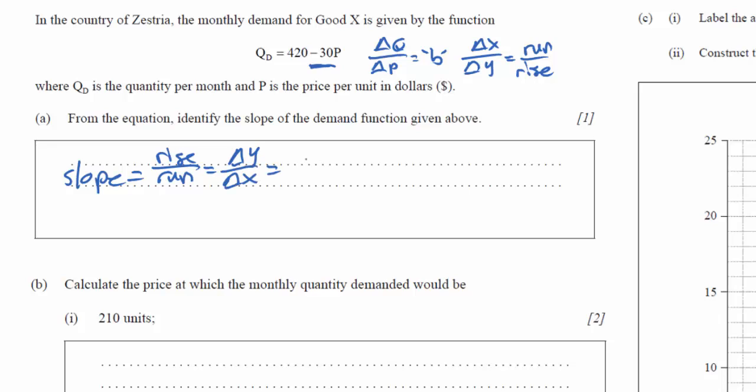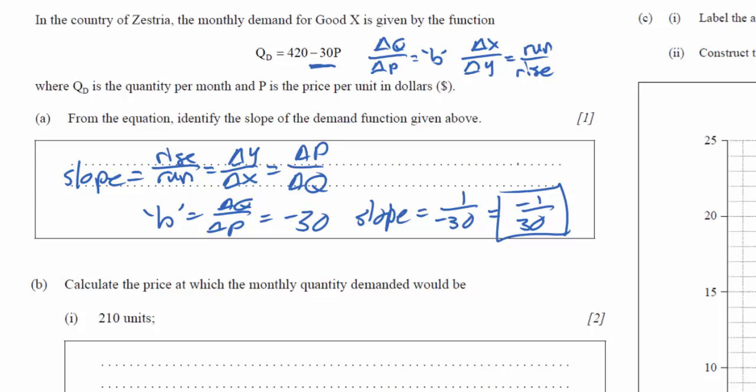In the case of price and quantity, we're really looking at change in P over change in Q. Now we know that the b variable equals change in Q over change in P, and that equals negative 30. So what is our slope? Our slope is the inverse of negative 30. So it's 1 over negative 30, which could be simplified as negative 1 over 30. That should be our slope of our demand equation.